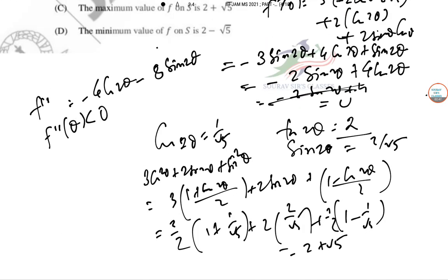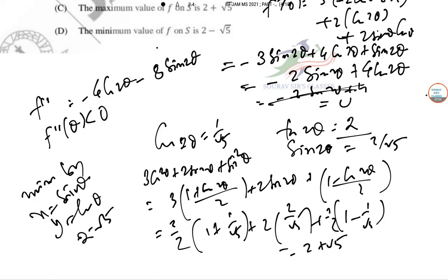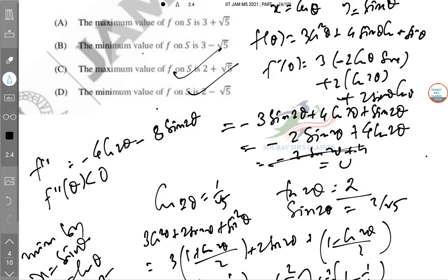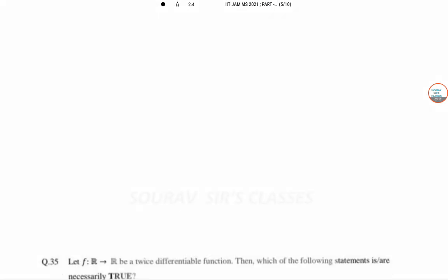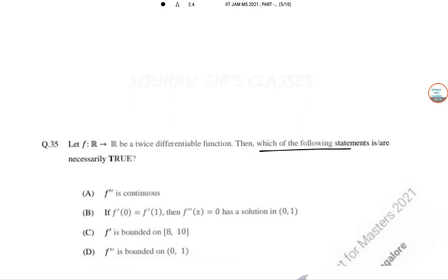Similarly, considering x = sinθ and y = cosθ gives the minimum value as 2 − √5. Hence the answers to question 34 are options C and D, both of which are correct.